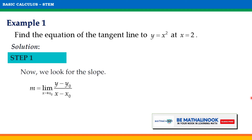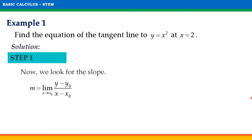Since we already have x sub 0 and y sub 0, we can now look for the slope. The formula for the slope of the tangent line is m equals the limit of y minus y sub 0 divided by x minus x sub 0 as x approaches x sub 0. We substitute x squared for y, 4 for y sub 0, and 2 for x sub 0.